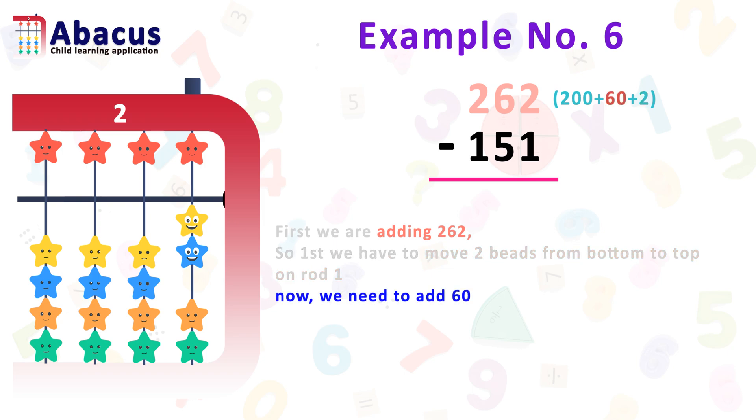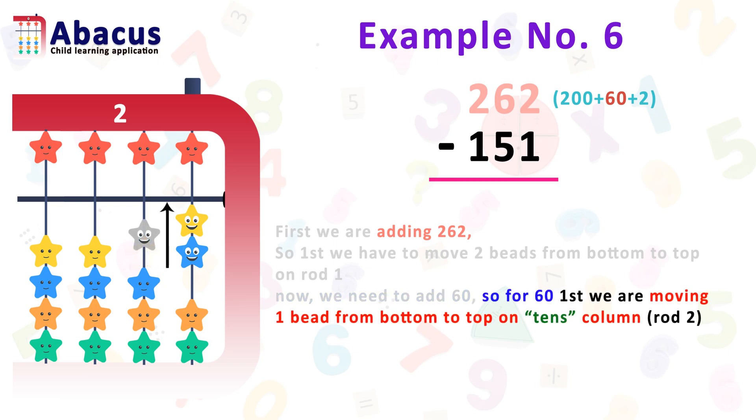Now, we have 60. So, for 60, first we are moving 1 bead from bottom to top on tenths column. That means rod number 2 below the beam.